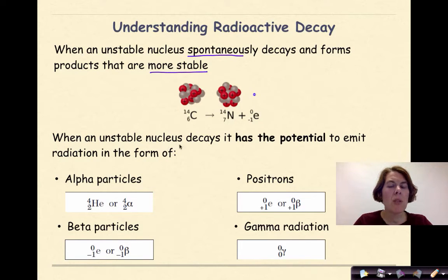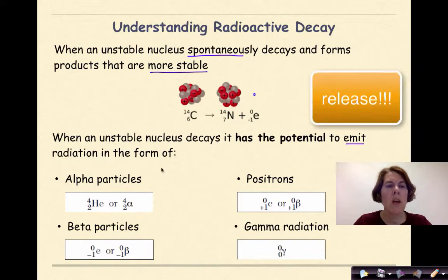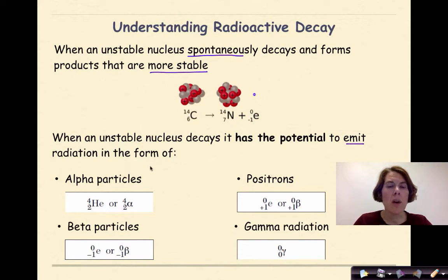When an unstable nucleus decays, it has the potential to emit, which is just a fancy word for release, radiation in the form of alpha particles, beta particles, positrons, and gamma radiation.